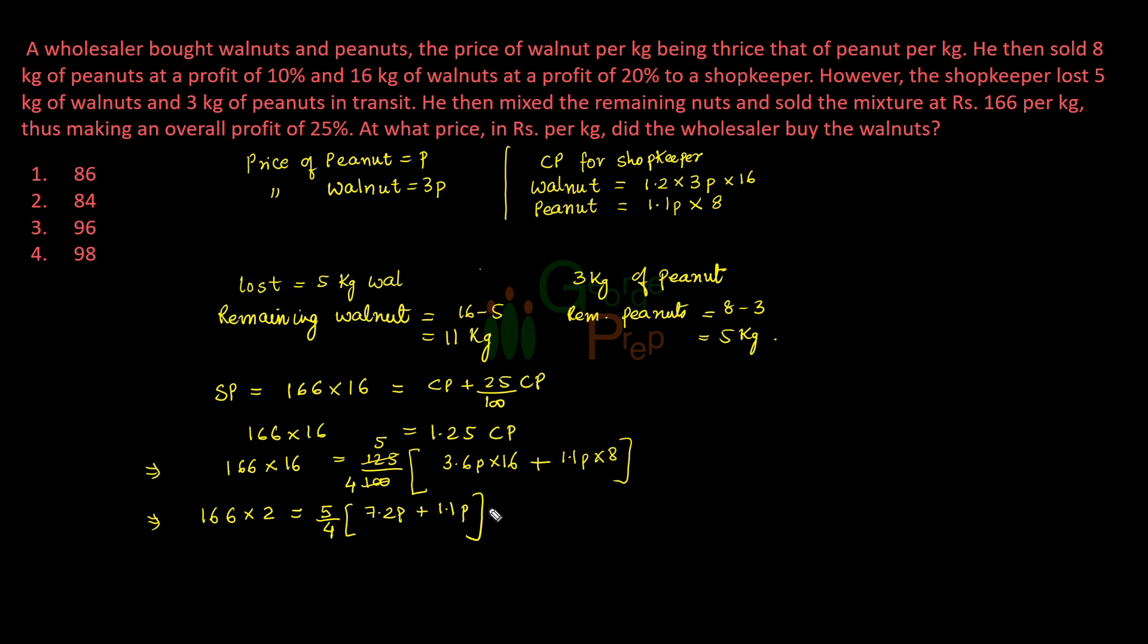Let me just take it above from here. I have just taken this equation here. This 5 by 4 I have taken on the other side. Then this gives us, this decimal I am taking and putting a zero here. So P turns out to be 32. We have to find out at what price in rupees per kg did the wholesaler buy the walnuts.